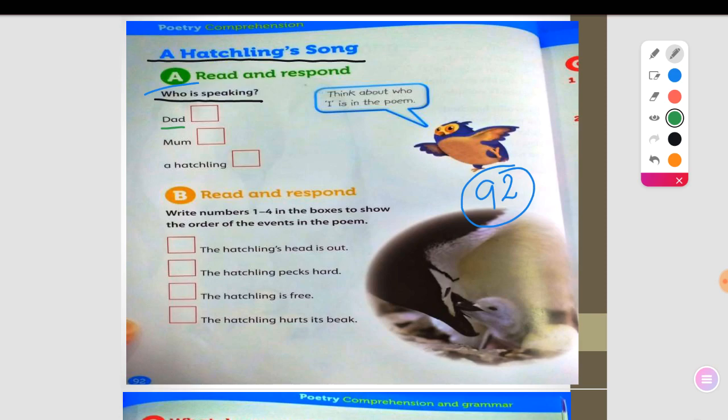It's not dad. How about mom? Is it mom? Can you tell me? No, she's not. How about the last word? Yeah, a hatchling. Is this the one? Yes, you're correct. So it is a hatchling.